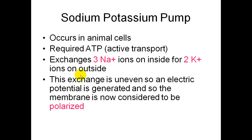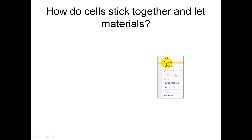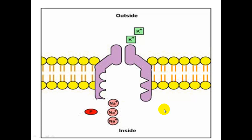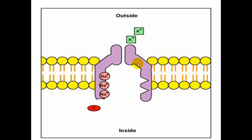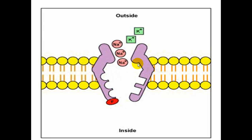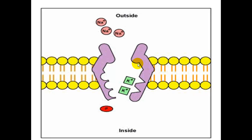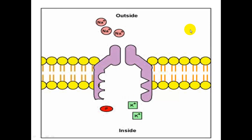This exchange is uneven — three and two don't equal the same amount — so an electric potential is actually generated on the membrane, and the membrane is then considered to be polarized. In the animation, sodium ions come in through the protein, energy from ATP is used, sodium leaves the cell, and then potassium comes in. Eventually the phosphate comes off and potassium is now inside the cell. That is the sodium-potassium pump.